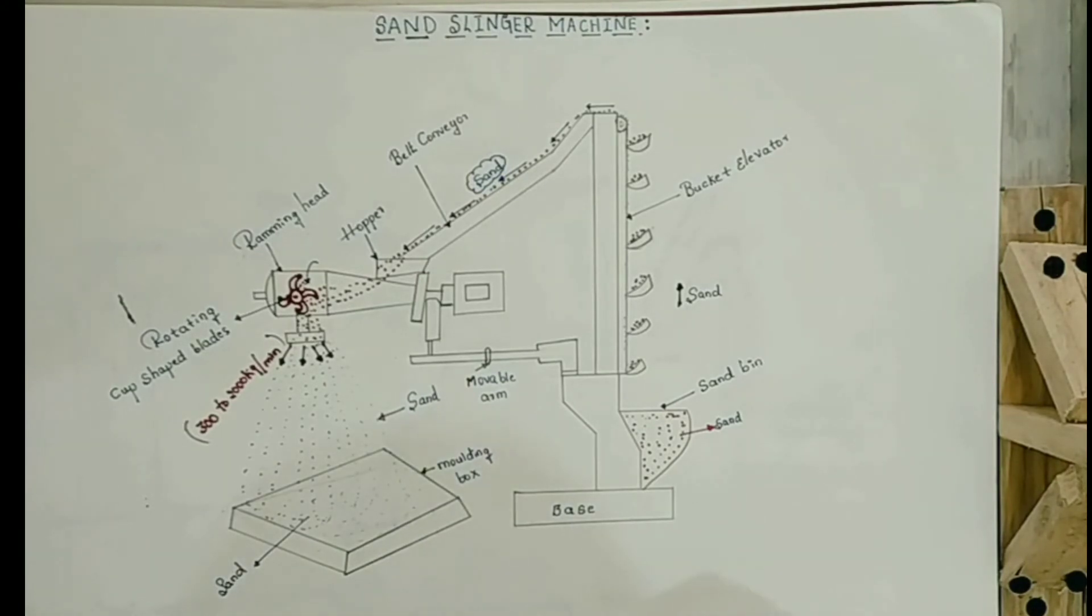And there is a movable arm which moves continuously and which connects the ramming head and base. This is all about construction of Sand Slinger Machine. Now I will explain about working principle of Sand Slinger Machine.